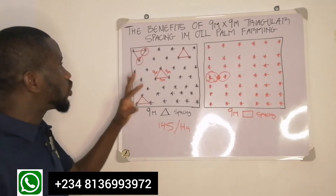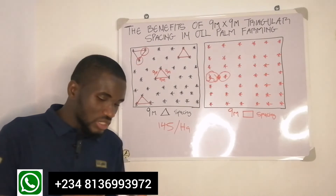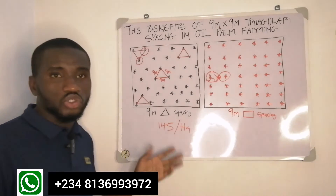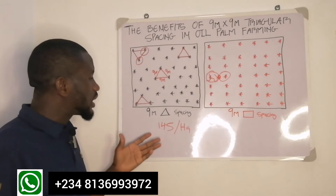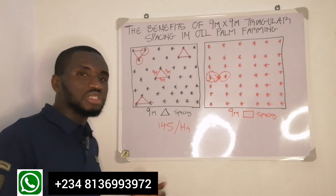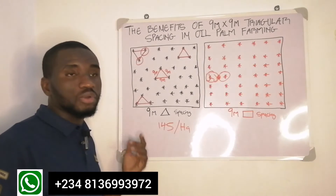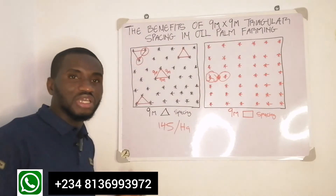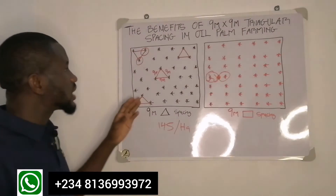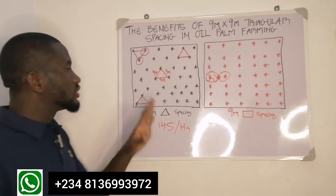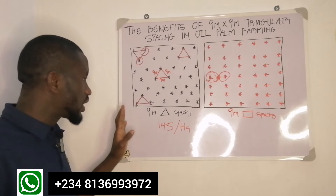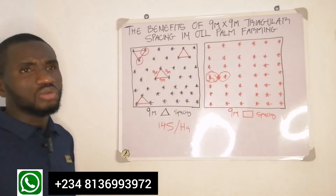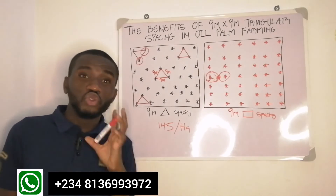This spacing is very important — don't just say you want to cut corners. There is a reason for everything we do in agriculture. That is why many people start on the wrong footing and end up with problems — the bunches will be rotting on the tree, they will not be ripening right. Those are the disadvantages of not following the standard spacing of oil palm.